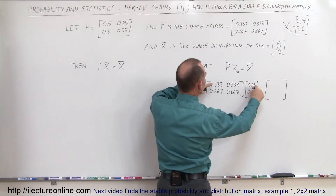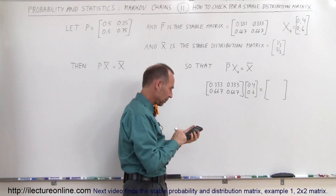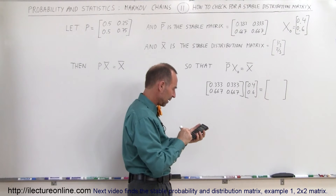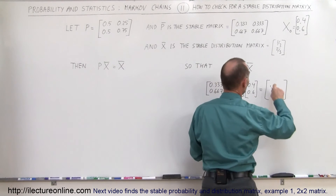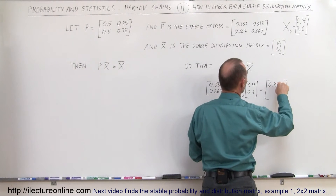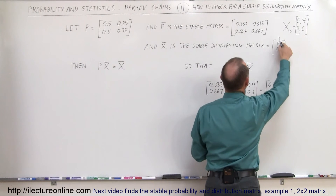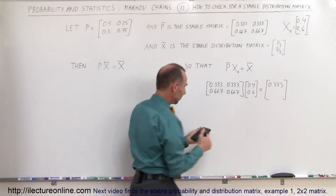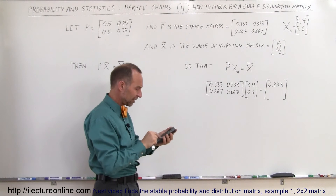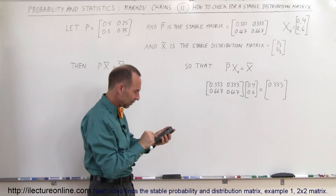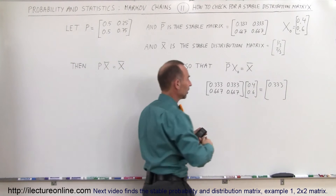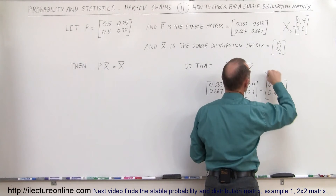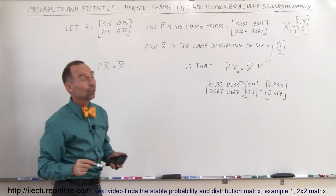For the top element: 0.333 times 0.4 plus 0.333 times 0.6 equals — sure enough — 0.333, which is the first element of the stable distribution matrix. Then for the second element: 0.667 times 0.4 plus 0.667 times 0.6 equals — sure enough — 0.667. So this checks out.